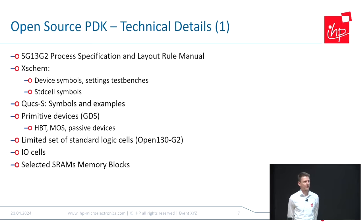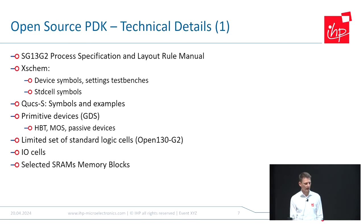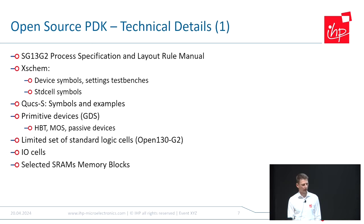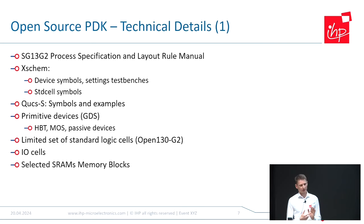Some technical details. First, we published the process specifications and layout design rule manual — that's the basic of a PDK. Then we have support for Xschem: device symbols, test benches, and some standard cell symbols. Support for KLayout with primitive devices currently in GDS format, for HPTs and passive devices — currently resistors and capacitors. For inductors, it's ongoing.